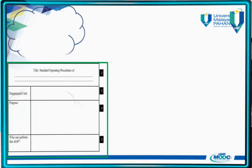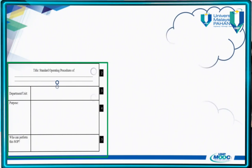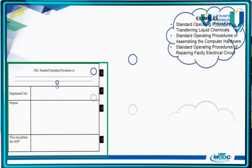Next is the title. The title of the SOP should be written at the top center of the page, as you can see on the slide. It should be preceded by the phrase 'Standard Operating Procedures.' For example: 'Standard Operating Procedures of Transferring Liquid Chemicals' or 'Standard Operating Procedures of Assembling the Computer Hardware.' You must start the title with the phrase 'Standard Operating Procedures of Doing Something.'